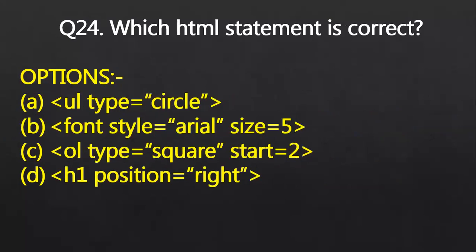Which HTML statement is correct? The answer is correct according to you. So, that is the A part, UL, unordered list, the values can be disk, square or circle. Second, that is the style attribute for CSS, inline CSS. So, the font face was on there. Third, ol type is not equal to square. Square is the value of UL. H1 is not position, H1 is not aligned. So, the only correct statement was the first one.